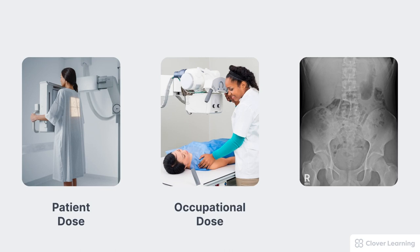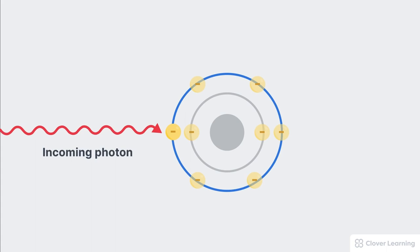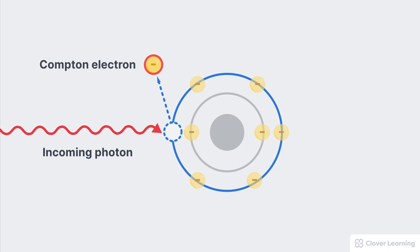The x-ray photon enters an atom in the body and the x-ray photon energy is partially absorbed by a loosely bound outer shell electron. This results in the electron being knocked out of its orbit, which we call ionization. The electron is commonly called a Compton electron because it was created by Compton scattering. The rest of the photon energy immediately exits the atom as a scattered photon — it has less energy than the original photon and it's going in a different direction. That's why we call it scatter.